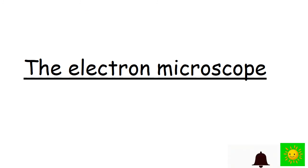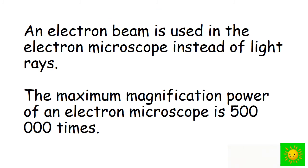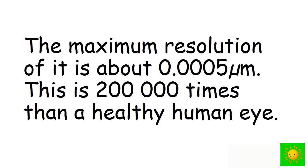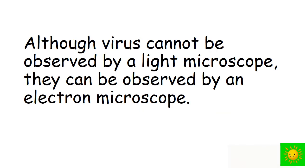The next sub-topic is the electron microscope. You can see an electron microscope here. An electron beam is used in the electron microscope instead of light rays. The maximum magnification power of an electron microscope is 500,000 times. The maximum resolution is about 0.00005 micrometres, which is 200,000 times better than a healthy human eye. Although viruses cannot be observed by a light microscope, they can be observed by an electron microscope.